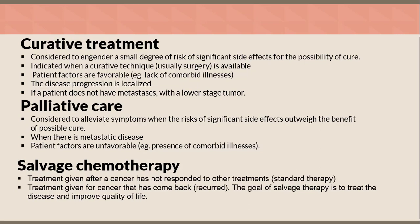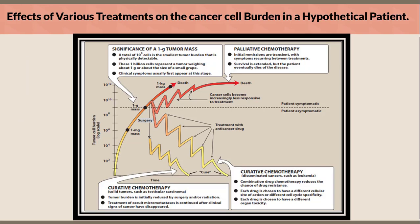This slide demonstrates the effects of various treatments on cancer cell burden in a hypothetical patient. The vertical axis represents tumor cell burden on a log scale, and the horizontal axis represents time. The cancer starts at a one milligram mass, which is asymptomatic. At one gram mass — representing 10 to the power of 9 cells — symptoms begin to appear. This is the smallest tumor burden that is physically detectable, roughly the size of a small grape, and clinical symptoms usually first appear at this stage.